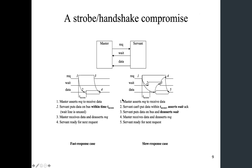The next one is a combination of both — a compromise. Physically we have a request signal, a wait signal, and data. The goal is the same: master is trying to read data from the servant. In a fast response case, there's no involvement of the wait signal — it's zero all the time — so this becomes a typical strobe protocol. The master requests, servant puts valid data after t-access time, master reads during that time frame, master de-asserts request, and finishes the transaction.